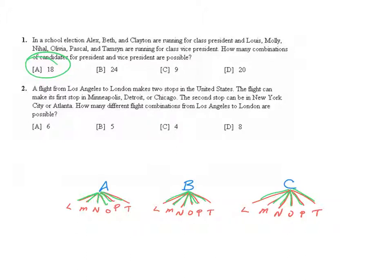You may have noticed that you could have just taken the number of possible people who could be president, which was three, and the possible number of people who could be vice president, which was six, and multiplied that together. That's known as the fundamental counting principle.